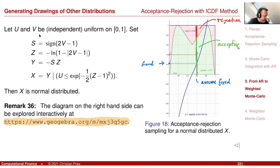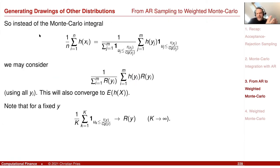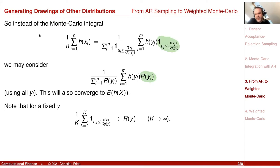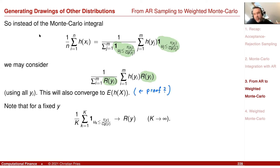So instead of the Monte Carlo integral with the indicator function, we may consider a weighted sum where the indicator is replaced by the probability of accepting the point, dividing by the sum of those weights. This will also converge to E[h(X)]. I will prove this on the next slide.